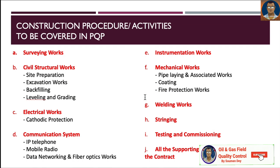Construction procedures and activities generally accompanied with a project quality plan include: surveying work; civil and structural work such as site preparation, excavation, backfilling, leveling, and grading; electrical work like cathodic protection; communication systems including IP telephone, mobile radio, data networking, and fiber optic work; instrumentation work; mechanical work; welding; stringing; testing and commissioning; and all supporting activities mentioned in the contract.